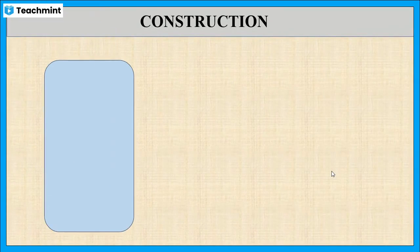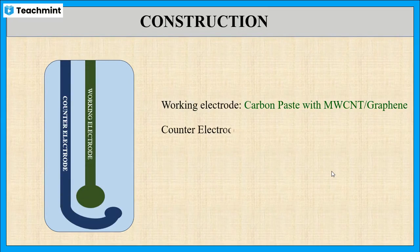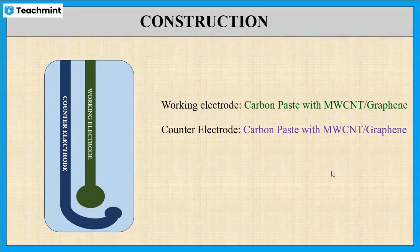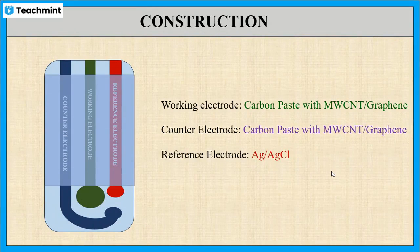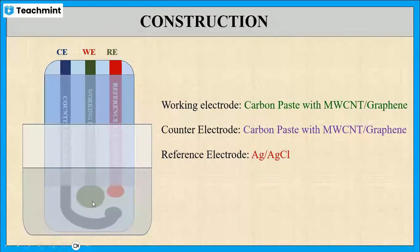It contains a plastic strip on which three electrodes are printed using screen printing technology. The working electrode and the counter electrode are printed with carbon paste along with multi-walled carbon nanotubes or graphene. The reference electrode is printed with the ink of silver-silver chloride. The upper part of the sensor is sealed with insulating material, and the strip is connected to an electrical connector and immersed in the analyte solution for measurement.